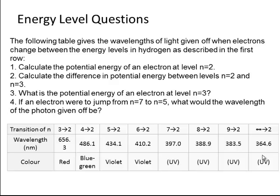So now some energy level questions. The following table shown at the bottom there gives wavelengths of light when electrons change between energy levels in hydrogen. So transition of n from 3 to 2 gives off wavelength of 656.3 nanometers in the color which is red. You're asked to do a series of things. Calculate the potential energy of an electron at level n equals 2. Then calculate the difference of potential energy between levels n equals 2 and n equals 3. Find out what is the potential energy of an electron at level n equals 3. And then if an electron were to jump from n equals 7 to n equals 5, what would the wavelength of the photon given off be?